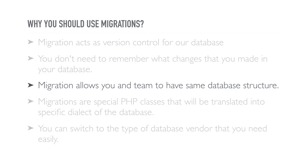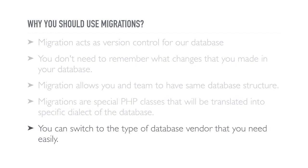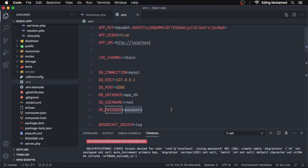This will prevent unwanted errors during development. Basically, migrations are written as PHP classes. When we run them, they will be translated into the specific dialect of the database we're working with. We no longer have to remember the syntax for creating tables, defining columns, or things like that. By using migrations, we can easily switch to the type of database vendor we need — for example, during development we might use MySQL or SQLite, but in production we can easily switch to PostgreSQL.